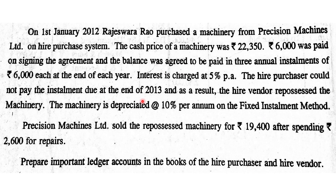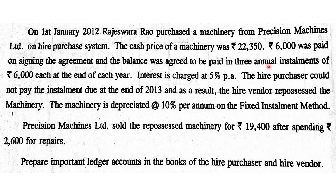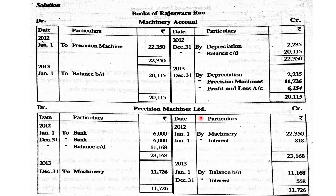The hire purchaser could not pay the installment due at the end of 2013 — the second installment is in default. The first installment was paid. For the accounting treatment, entries for interest and depreciation up to the date of default will be passed. Depreciation entry: Depreciation Dr. to Asset Account — ₹2,235.